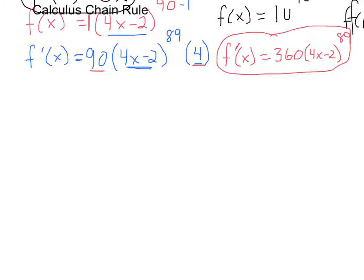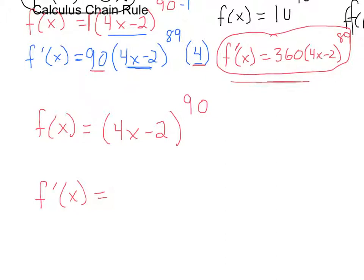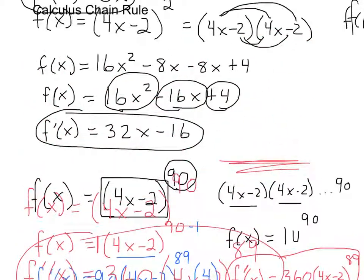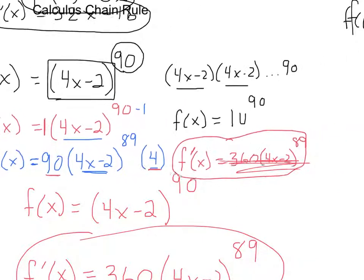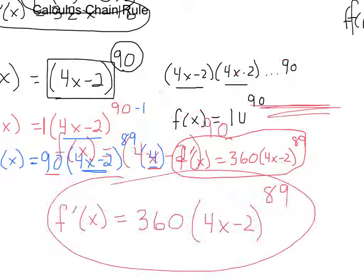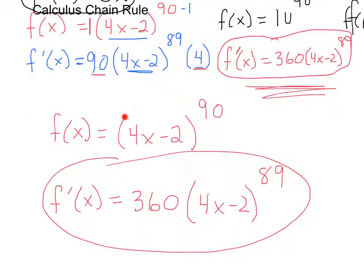Simplifying: 90 times 4 equals 360, so f'(x) = 360(4x - 2)⁸⁹. Let me write it cleanly one more time: the original function was f(x) = (4x - 2)⁹⁰, and the derivative using the chain rule is f'(x) = 360(4x - 2)⁸⁹. That's the slope of the tangent line everywhere. The benefit is clear — I didn't have to FOIL 90 times; the chain rule gave me the answer directly.